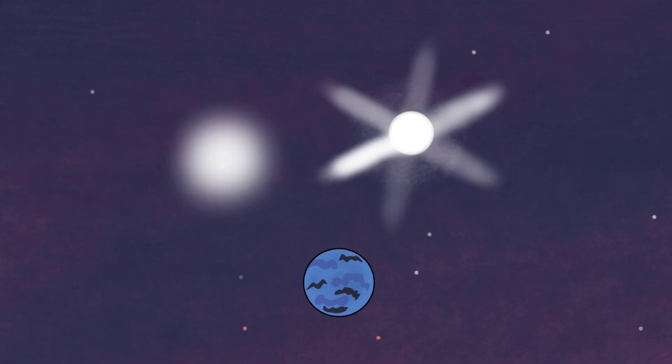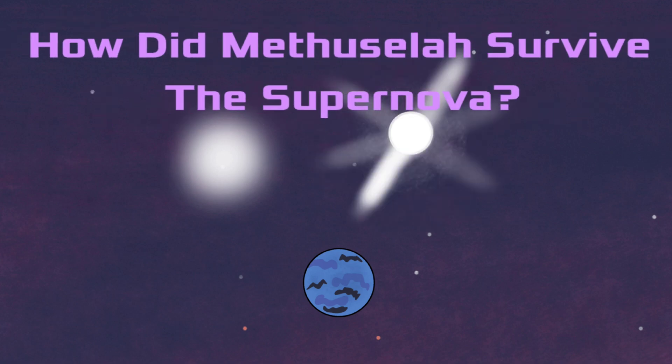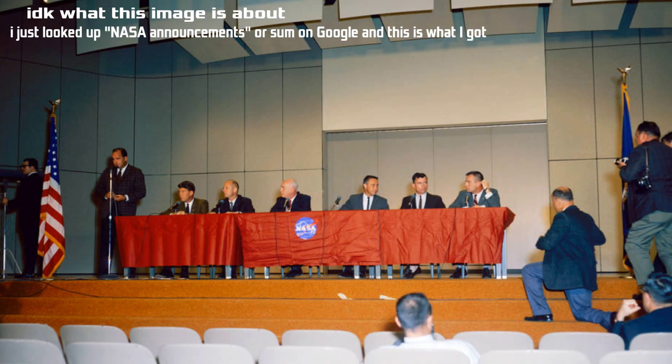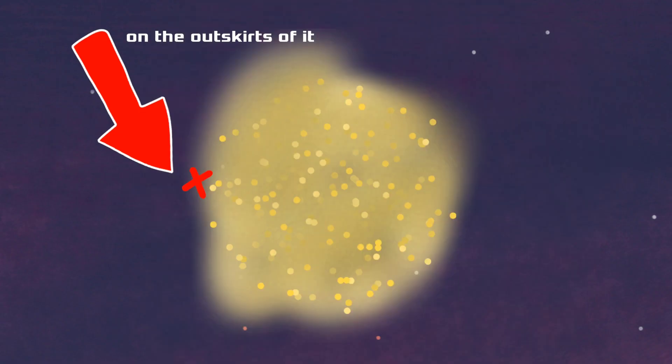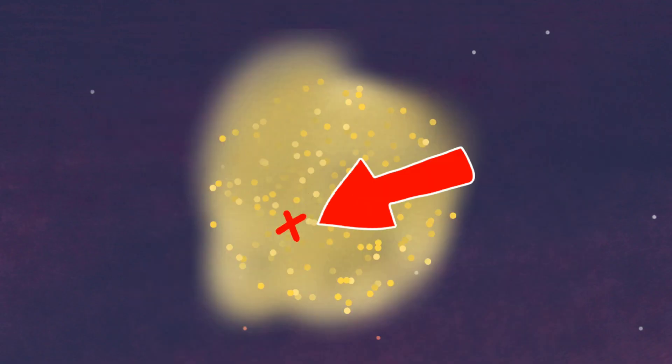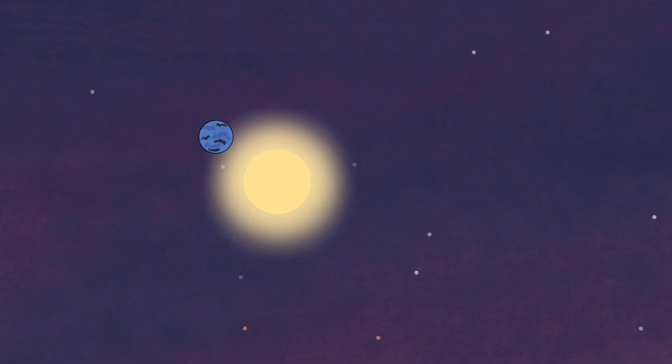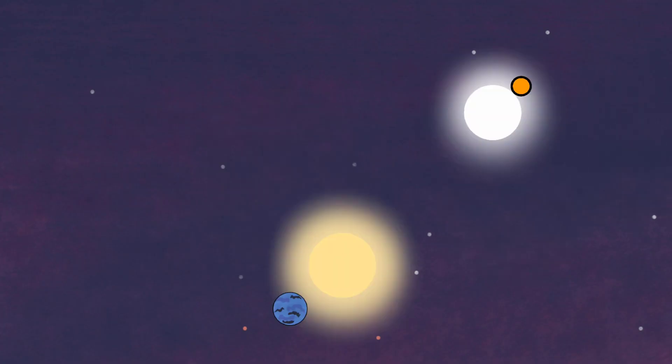Given the fact it orbits a neutron star, how did Methuselah survive the supernova that created it? The answer, it probably didn't. Although uncertain, scientists think that Methuselah originated in its own solar system within the M4 cluster of stars until it traveled through the core of a cluster where it attracted a neutron star and its companion. After a lot of spinning around each other,